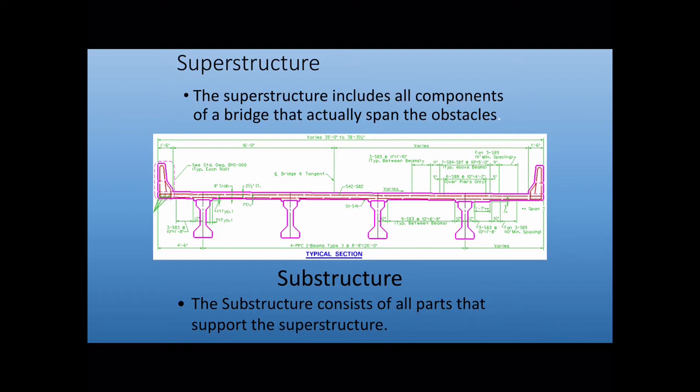Now the substructure consists of all the parts that support the superstructure. So a good way to remember this, the substructure is anything that has gone in the vertical direction. So all the way from the footings of our bridge, whether that's piling, drilled shafts, or just a regular footing up into the pier columns, the pier base, the pier cap, the inbents, the abutments, all of that is considered the substructure. And the concrete for our substructure is class A concrete.